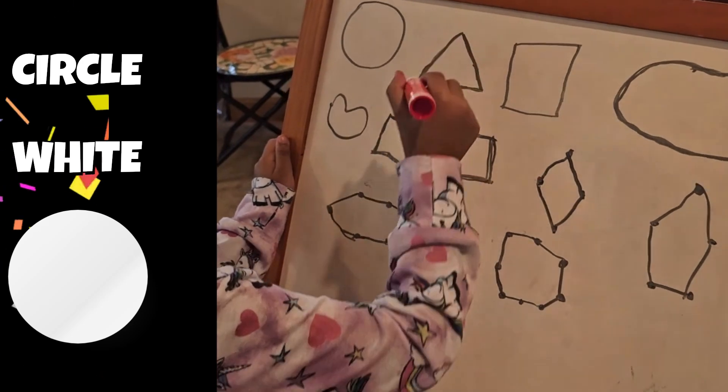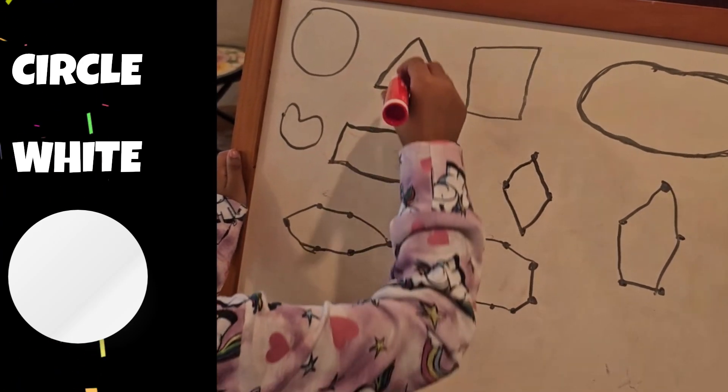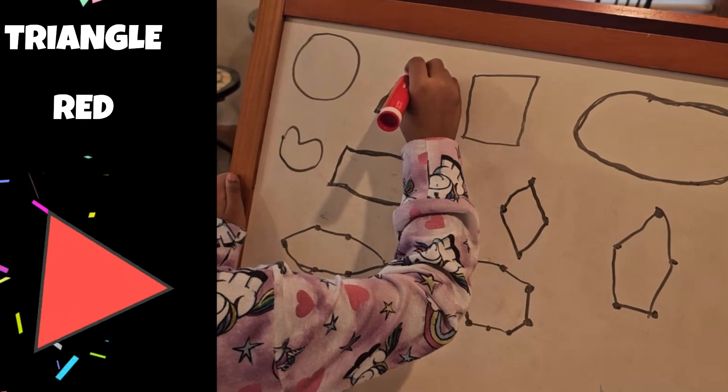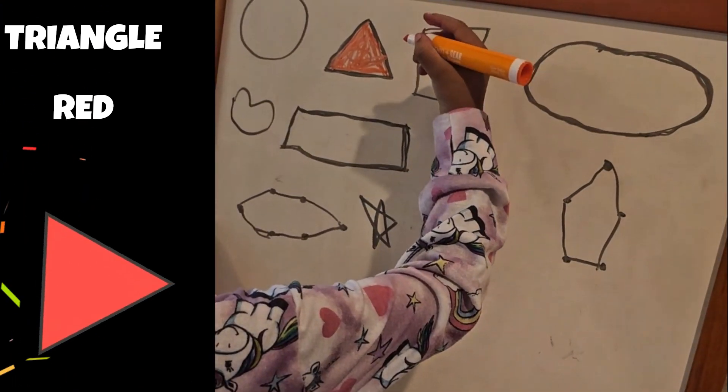What color is circle? White. Okay. Triangle. Red. Orange. Okay.